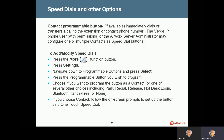To add or modify speed dials, press the more function button, then select the Settings soft key. Scroll down to Programmable Buttons and hit the center select button. It will prompt you to press the programmable button you wish to program. You can pick an available speed dial or reprogramming an existing one. Note that you cannot reprogram buttons the administrator has designated as off-limits, such as call appearance buttons — but you can edit any of the others.